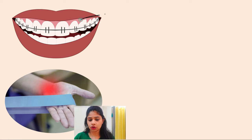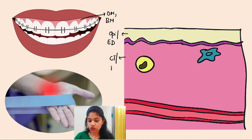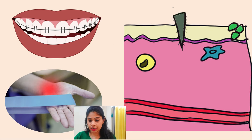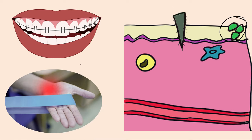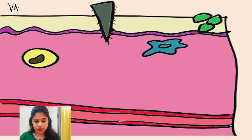If we consider any skin or mucosa — be it the oral mucosa, buccal mucosa, or gastric mucosa — it is mainly made up of layers: a layer of epithelium and a layer of connective tissue. In skin, the epithelium is called the epidermis and the connective tissue is called the dermis. In case of any injury — physical or microbial — two events follow in the connective tissue: vascular events, associated with blood vessels, and cellular events, associated with cells such as neutrophils and macrophages.